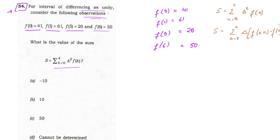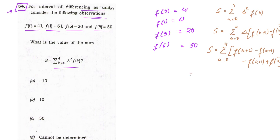Repeating the same with the second delta, we get: f(k+2) minus f(k+1) from the first part, and minus of f(k+1) minus f(k) from the second part. Since this is a minus function, the last term becomes plus. So S equals summation k from 0 to 4 of f(k+2) minus 2f(k+1) plus f(k).